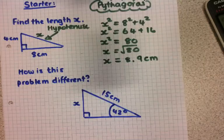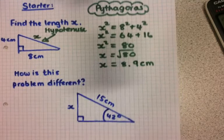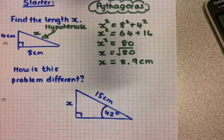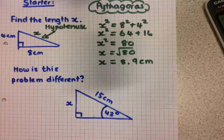Let's have a look at the next problem. How is the next problem different? We're still looking for a missing side, but what else do you notice?